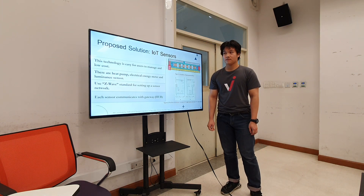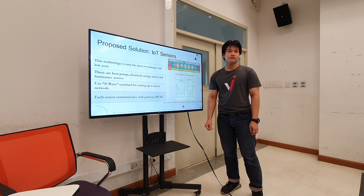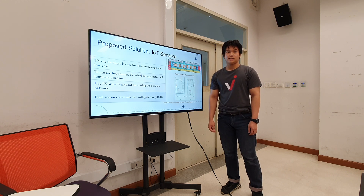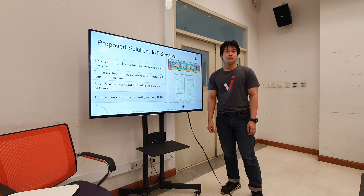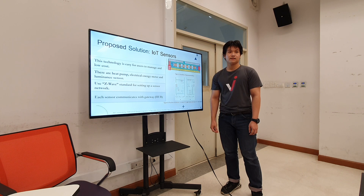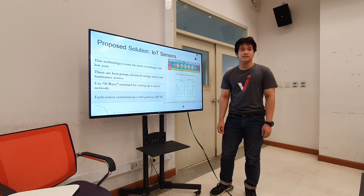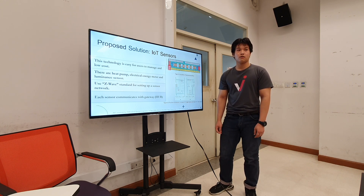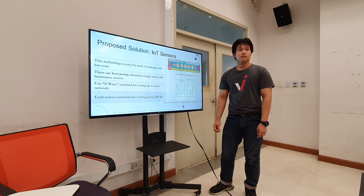Regarding IoT sensors: innovative IoT sensors are easy to manage for real-time measurement and monitoring of building environmental conditions and energy consumption. A radio standard called Z-wave is also used to set up a wireless sensor network. Z-wave has the advantage of using less energy, and the network becomes stronger depending on the number of devices. These devices communicate with a central device called a controller or gateway, which sends data from the sensors to the IoT platform.